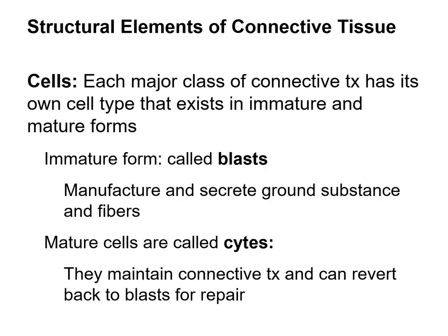That covered the extracellular matrix, but remember the matrix is the space in between the cells — what about the cells themselves? That will depend on what type of connective tissue we're dealing with. If the cells are immature, meaning they are still secreting material into the extracellular matrix, those cells are called blasts — typically that will be the suffix of the cell's name. When cells are done secreting they are called cytes, meaning they have completed their blast or secretion stage and are now in a mature stage of maintaining the area.